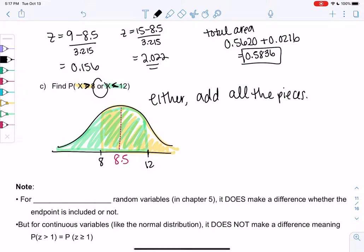So option one is we can find all these pieces and add them up. But I noticed that I shaded the whole curve. So the area is the whole curve or 1. We're done. We don't even have to use normal CDF. So the picture saved us a lot of time.